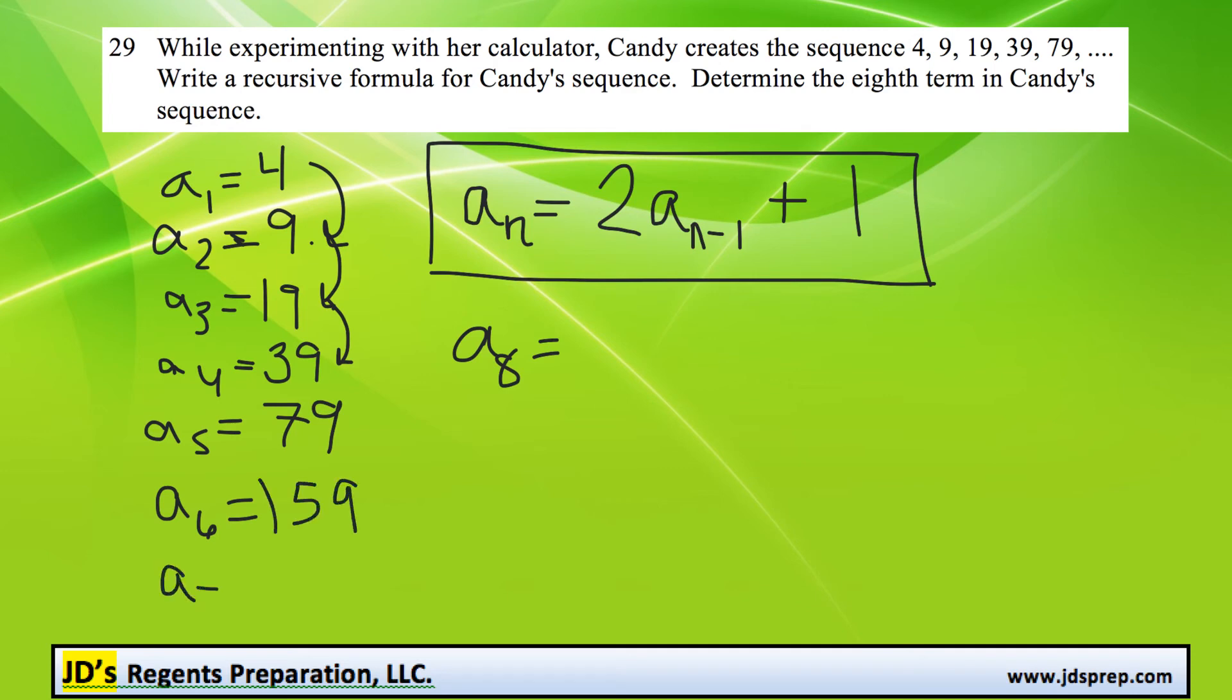And then our 7th term, we would double 159, which is 318, plus 1 to get 319. So now we can figure out our 8th term by doubling the previous term, which is 319, and adding 1. And that gets us an answer of 639.